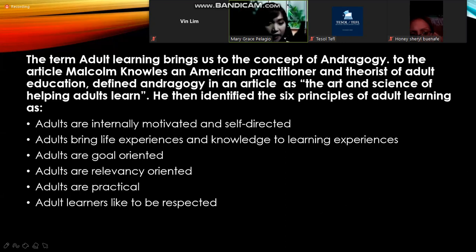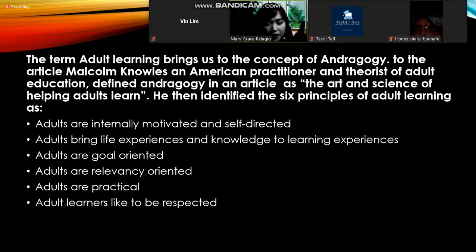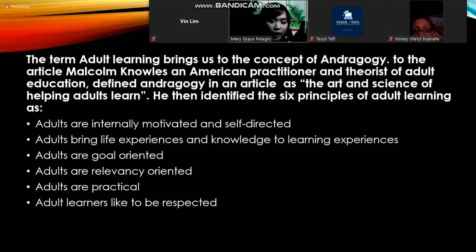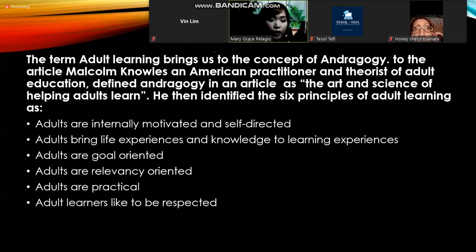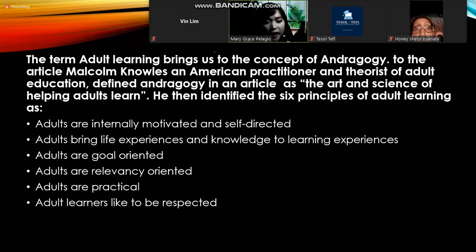First, adults are internally motivated and self-directed — they know what they want to learn and how to get it. Second, adults bring life experiences and knowledge to learning experiences, as they have existed in the world longer and have much to share. Third, adults are goal-oriented, knowing how to pursue their goals. Fourth, adults are relevancy-oriented — if something is not relevant, they won't engage with it. Fifth, adults are practical — they do things in the easiest but smartest way.